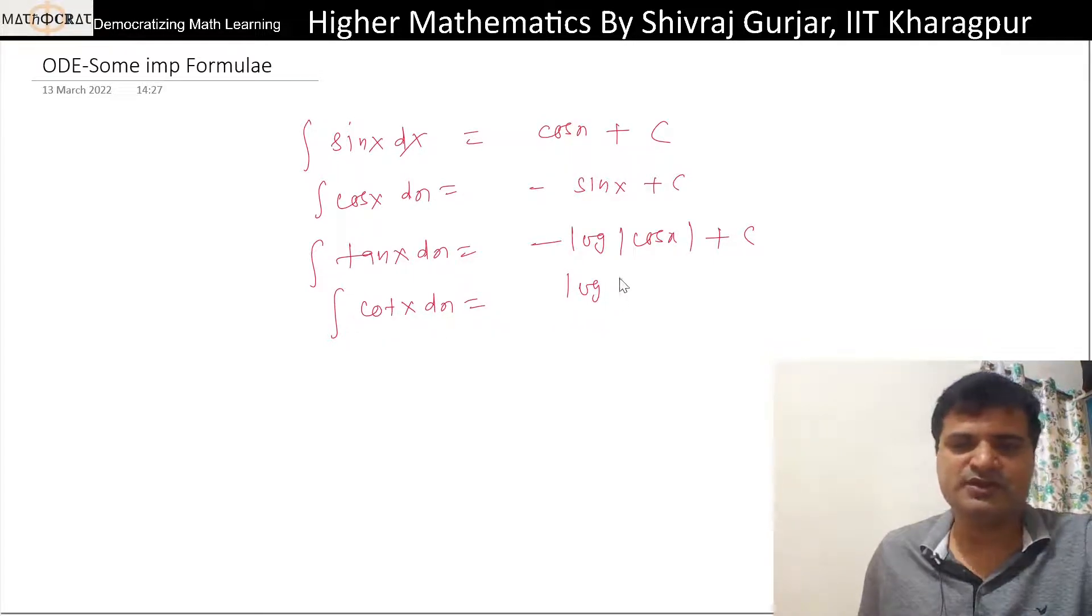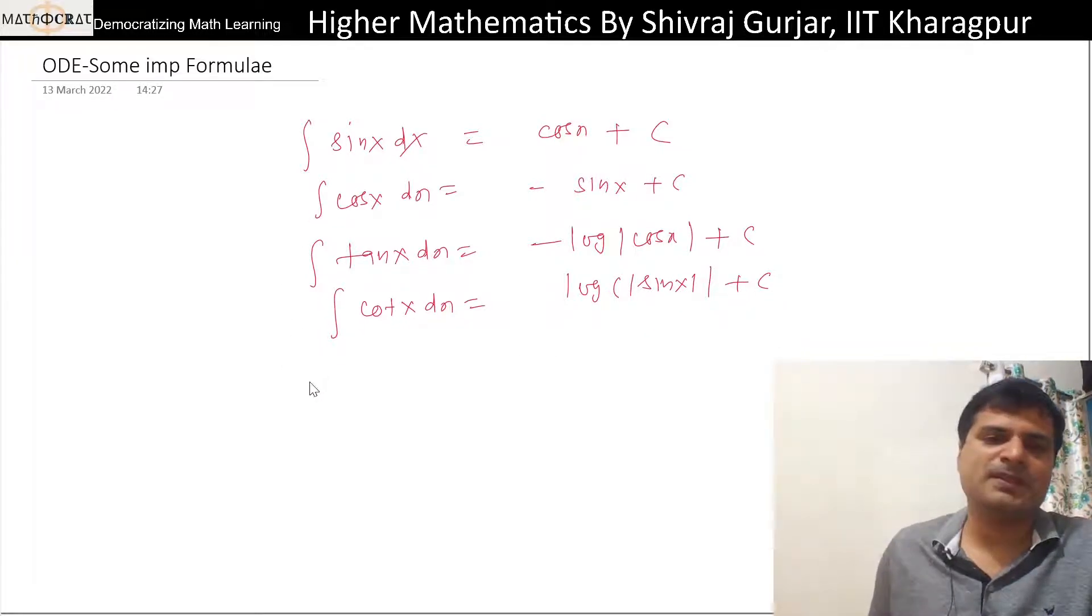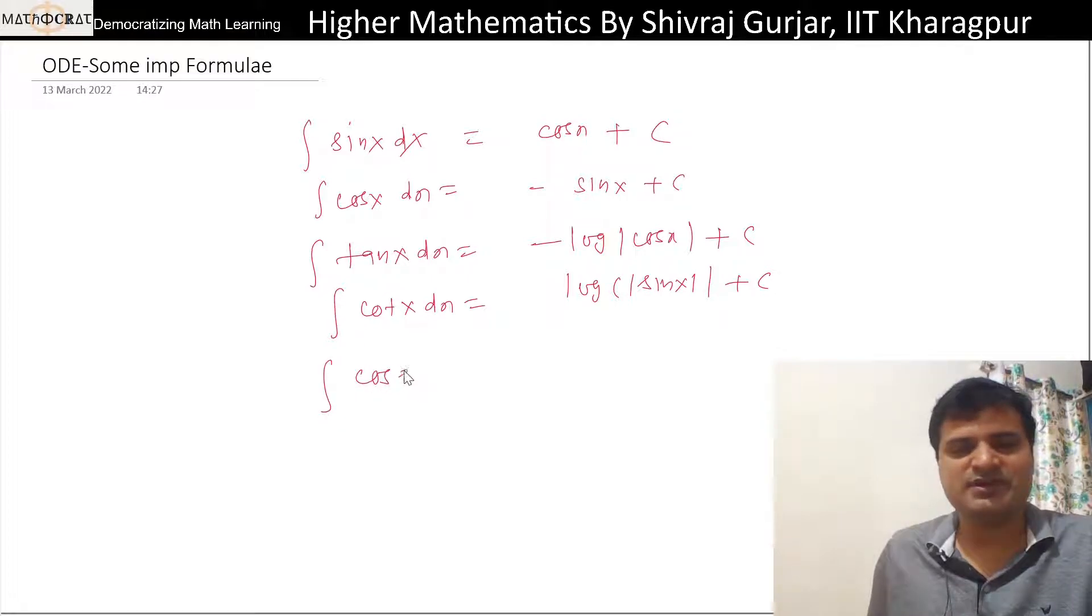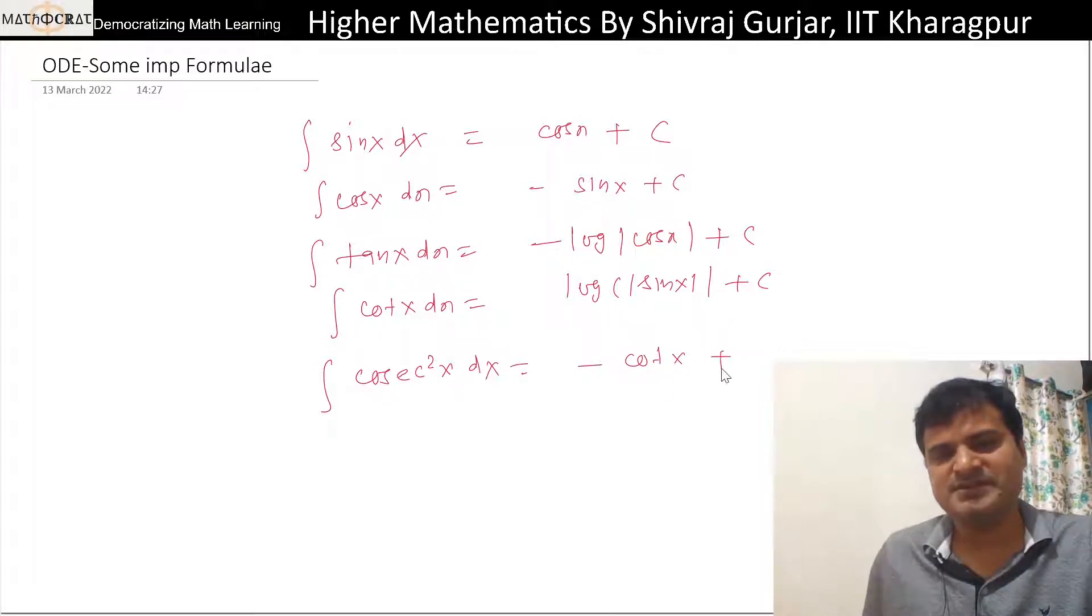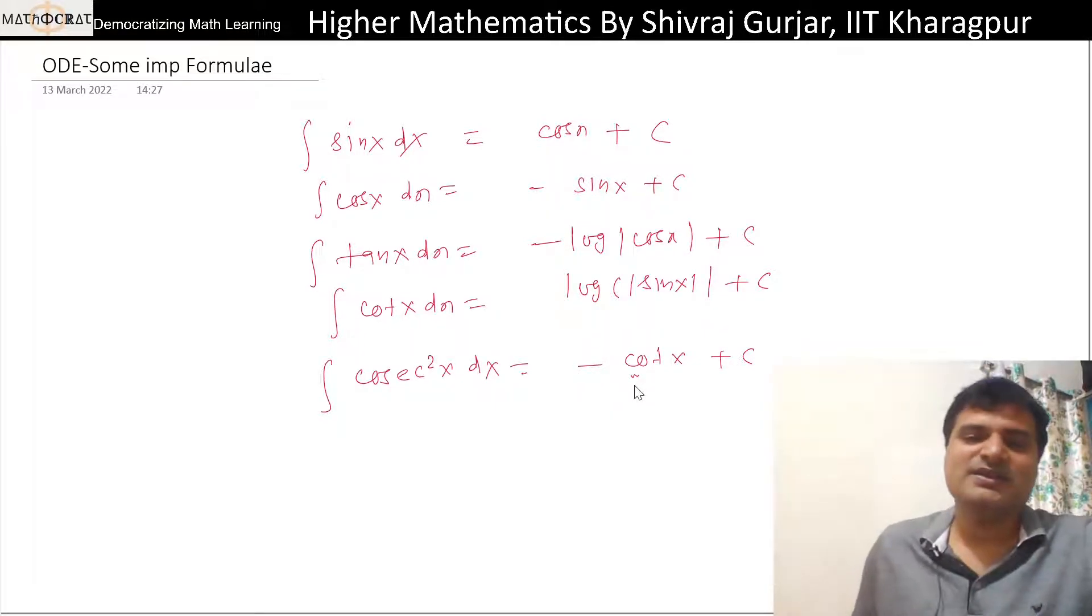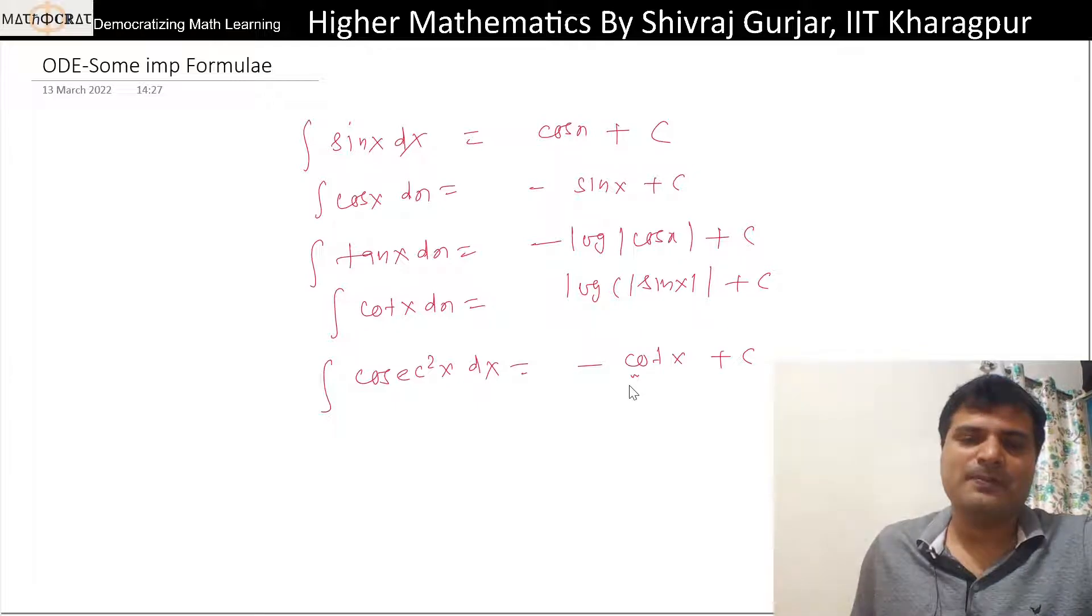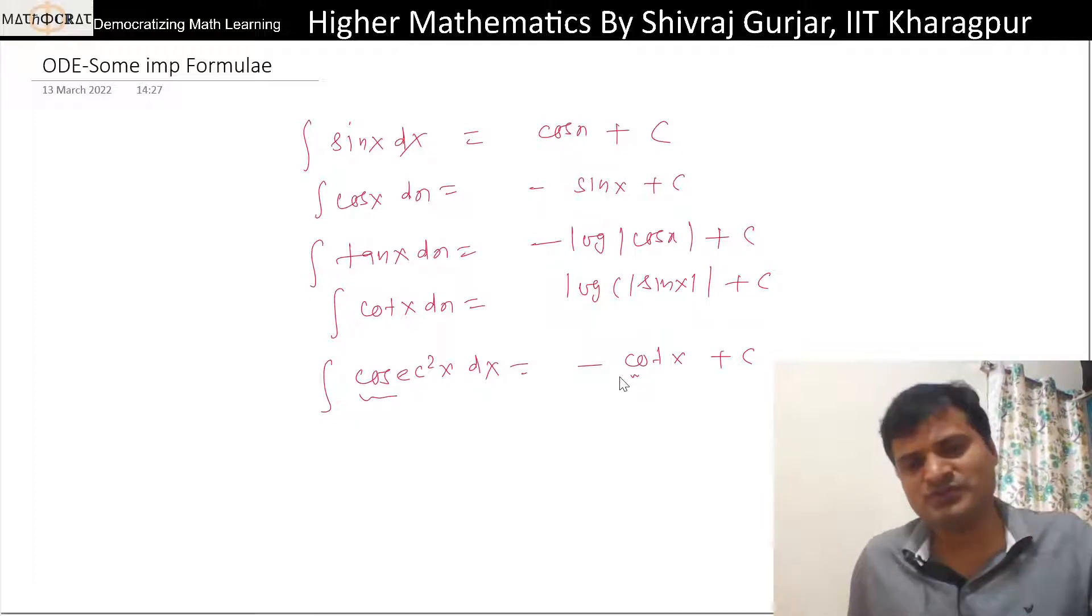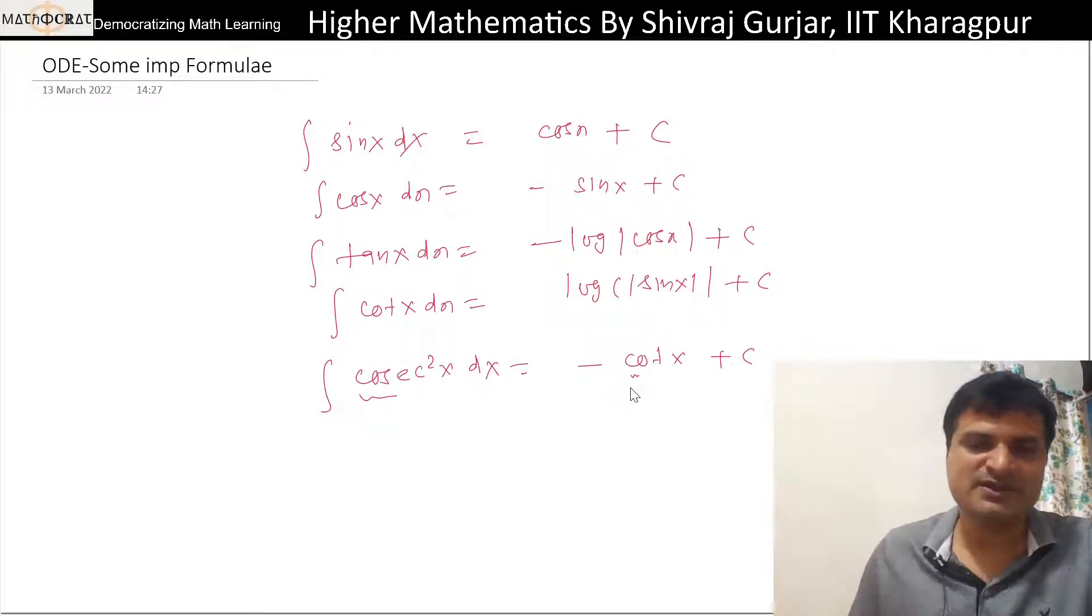Cosec square x dx will be minus cot x plus C. In trigonometric functions, whichever has C before integration, after integrating that integration will have minus sign. Like cosec square x has C, so the integration becomes minus sign x. Sec square x also has C initially, so minus sign appears.